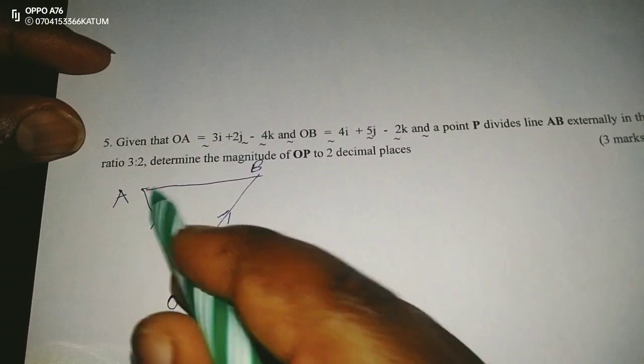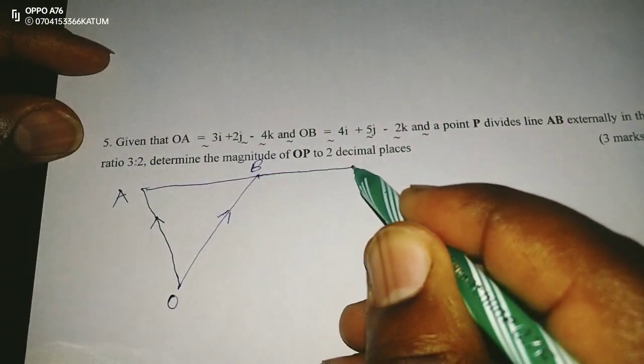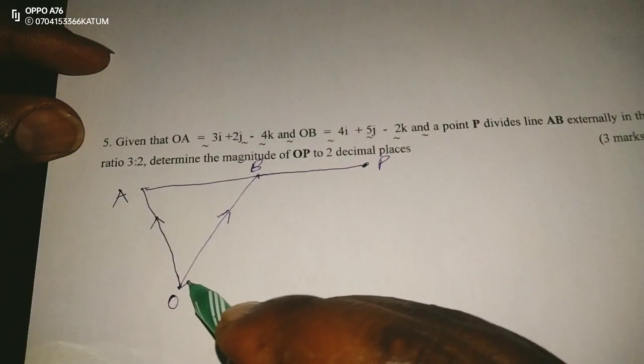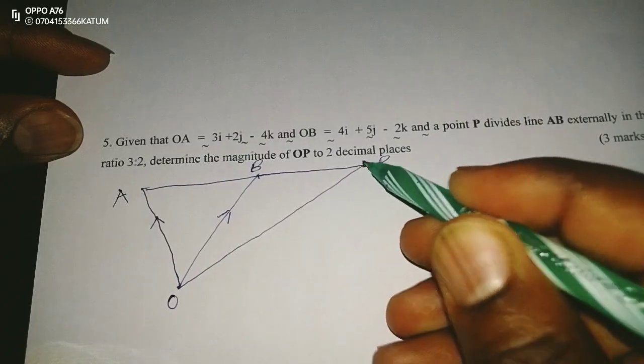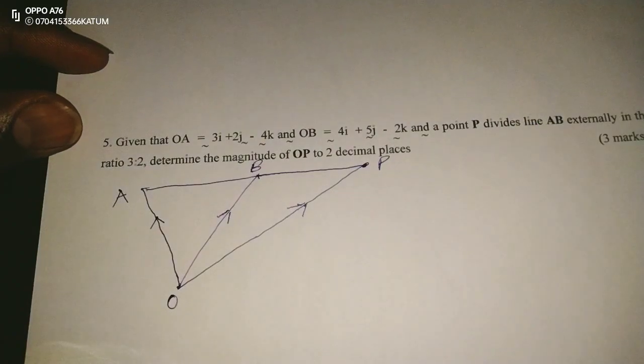Then now we are told along line AB now, there is a point which divides. So the point is P. Now P divides externally. That is why it is not in between A and B. Therefore, there is also a vector OP which gets introduced there.